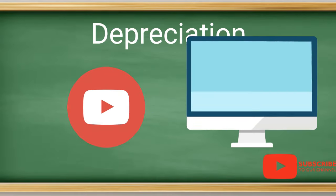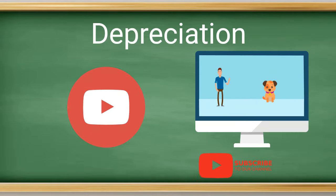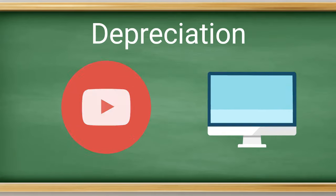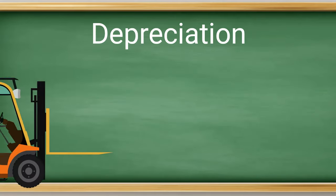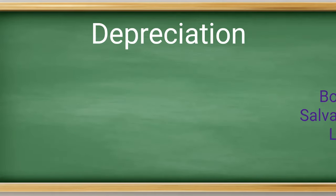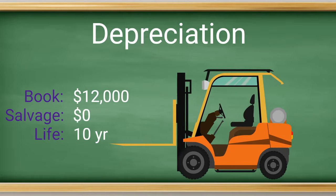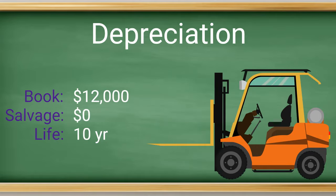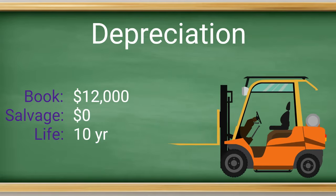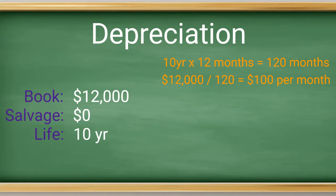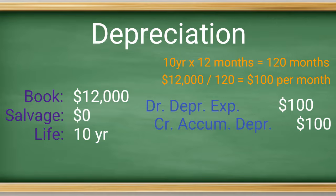On to the next example, which is depreciation. We suggest watching our previous episode on depreciation and how to calculate depreciation for a refresher on that topic. You need to record depreciation for your equipment that has a $12,000 value, zero salvage value, and a 10-year life. That means this month's depreciation is $100. Therefore, our adjusting journal entries are a debit to depreciation expense for $100 and a credit to accumulated depreciation.